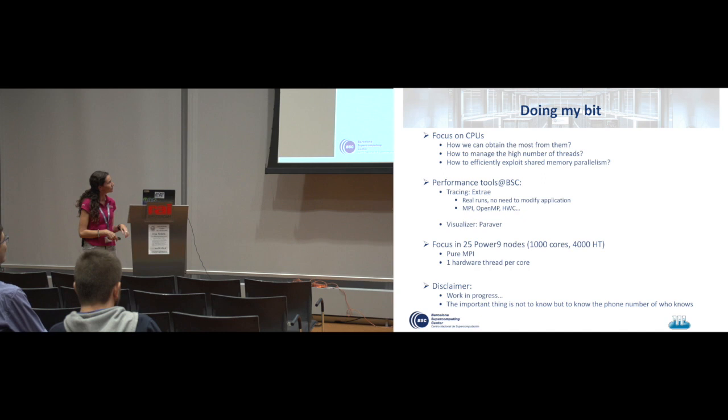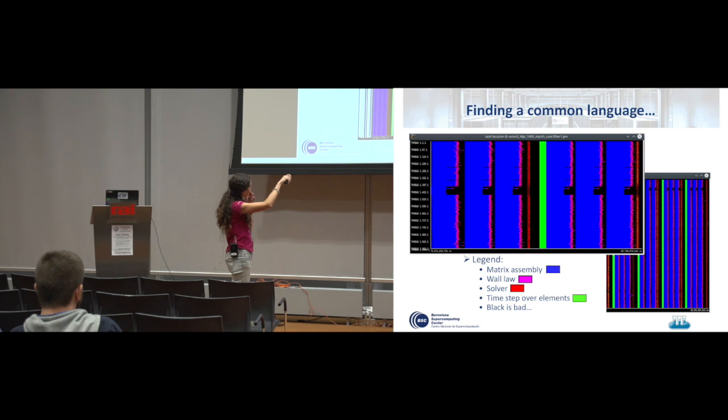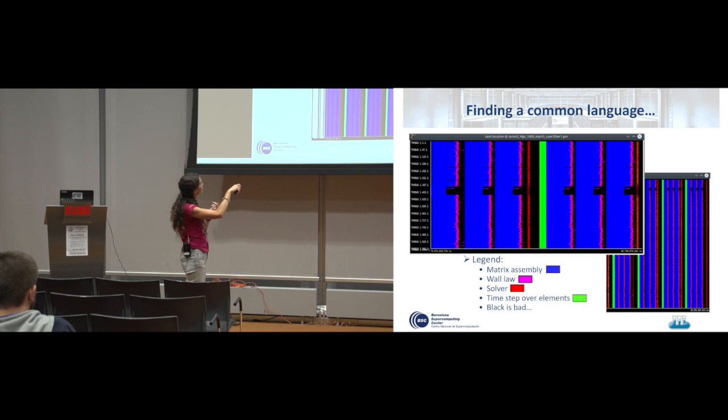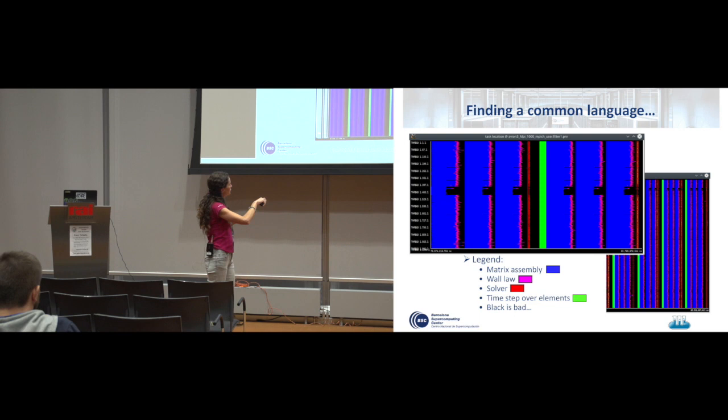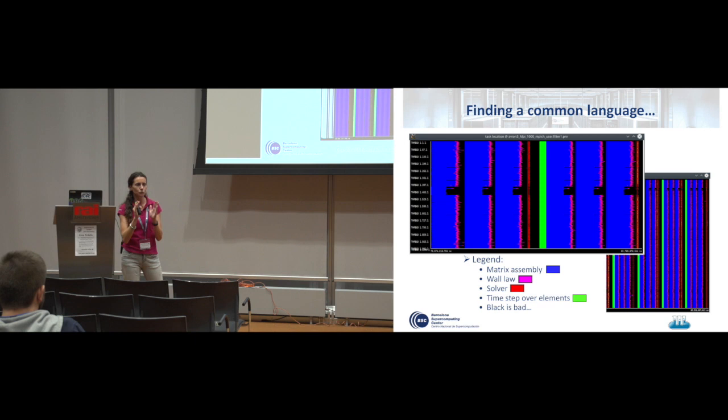This is our Paraver trace. On the y-axis you can see the different MPI processes — we have 1,000 of them, so you cannot read much here. This is a timeline of the execution. I added some events to identify the different phases of the simulation, so I could talk the same language as the physicists who wrote the application.